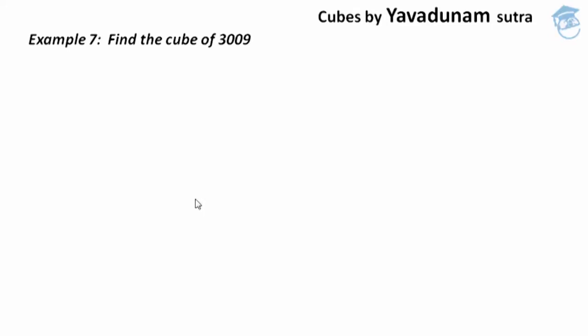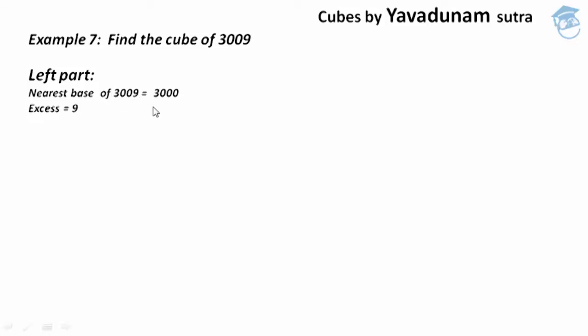In order to find the cube of 3009, we have some parts of the procedure to follow. The first part is the left part. The first step is to find the nearest base of the given number 3009. The nearest base of 3009 is 3000. Next, we find the excess by comparing the given number 3009 and the base 3000. We get an excess of 9.